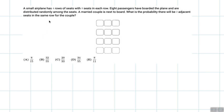A small airplane has four rows of seats with three seats in each row. Eight passengers have boarded the plane and are distributed randomly among the seats. A married couple is next to board. What is the probability that there will be two adjacent seats in the same row for the couple?